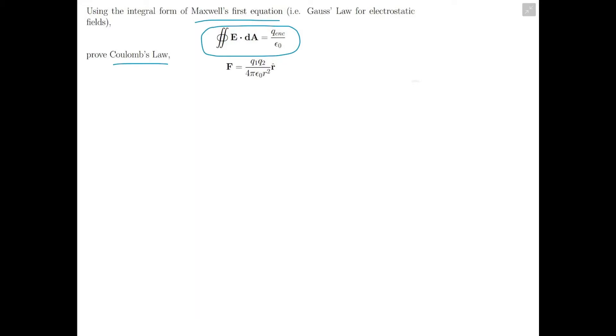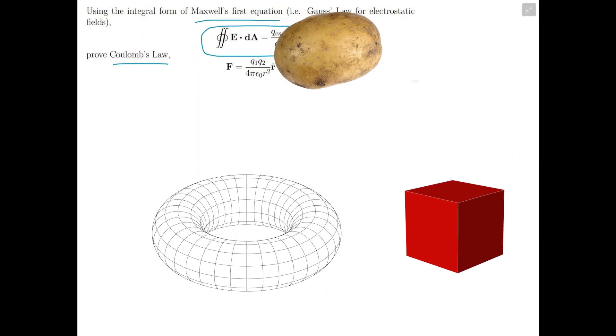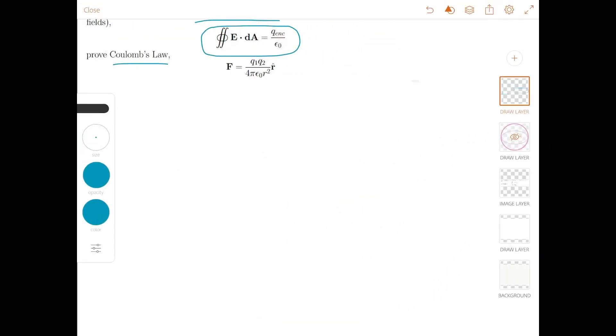First things first, with this version of Gauss's Law we need to find a Gaussian surface to integrate over. That's just a surface we need to pick—it could be a potato, a cube, a donut, any surface in three-dimensional space.